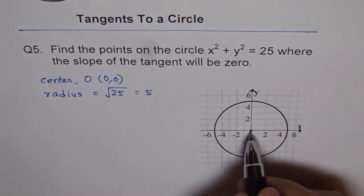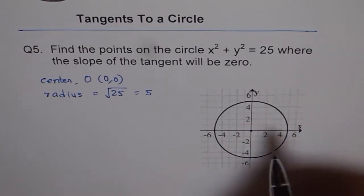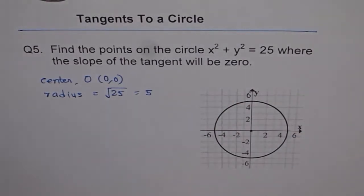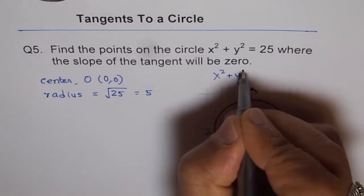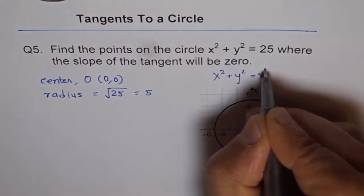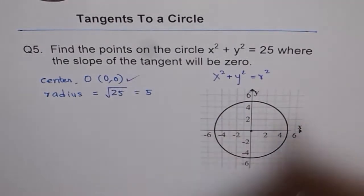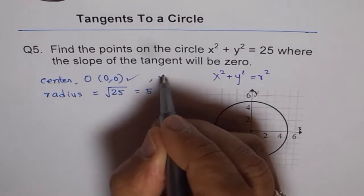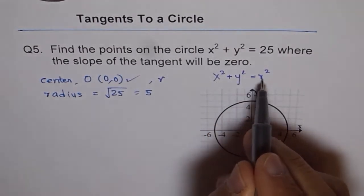So that is the circle with center at origin and radius as 5. In general, let me remind you that equation of the circle is x square plus y square equals to r square. So we are only considering circles with center at origin and radius r.